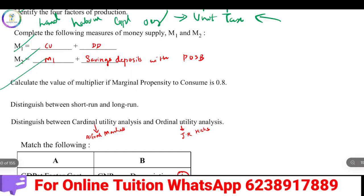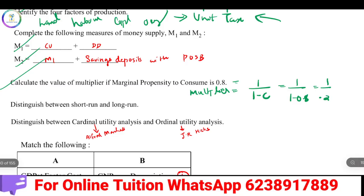Calculate the value of the multiplier if marginal propensity to consume is 0.8. Value of multiplier equals 1 divided by (1 minus MPC), that is 1 divided by (1 minus 0.8), which equals 1 divided by 0.2, which equals 5.